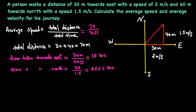When we divide 70 by 41.66, that gives 1.68 meters per second. That's the average speed.